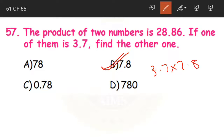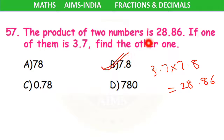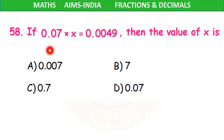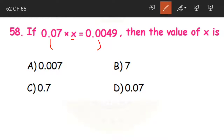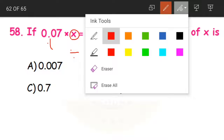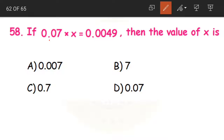Verified: 3.7 into 7.8 is equal to 28.86. To divide two decimal numbers, we converted them into fractions and then followed the method for dividing two fractions. Next question 58: if 0.07 into x equals 0.0049, find the value of x. We will go for trial and error method.